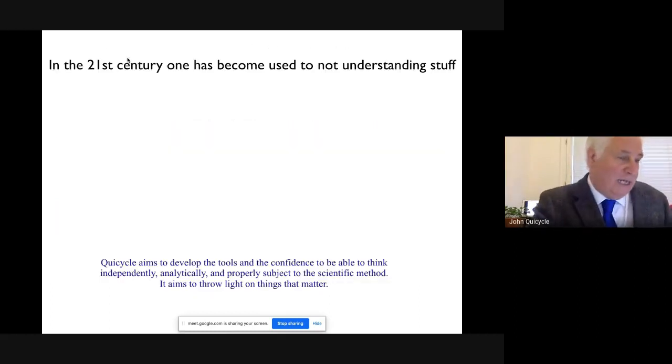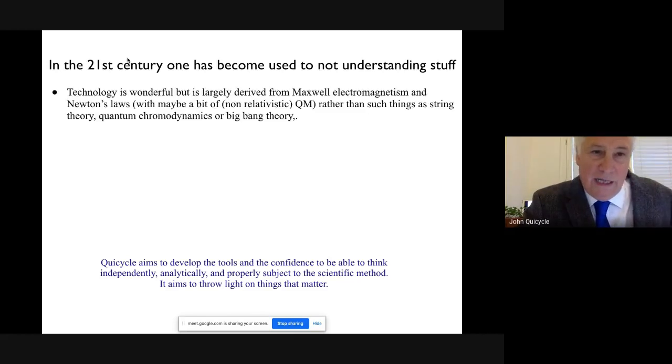Now, what is the current situation? The current situation is that here in the 21st century, all of us have become used to not really understanding stuff. The scope of the stuff we don't understand is enormous. But what has been happening is technology - technology as it stands seems to be extremely complicated, extremely complex.